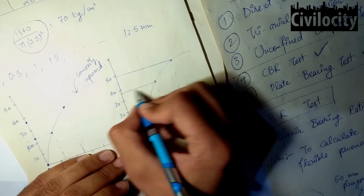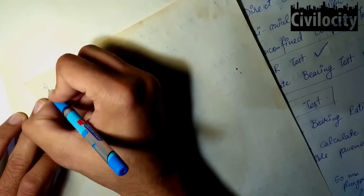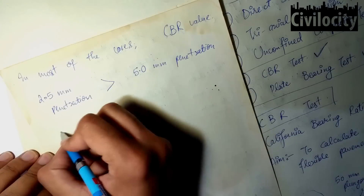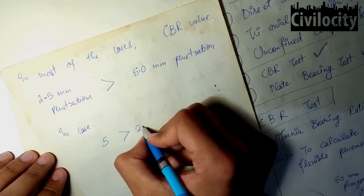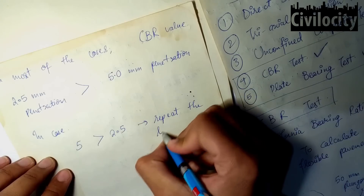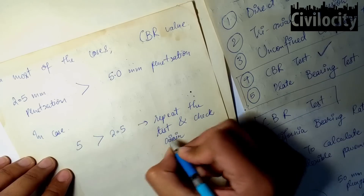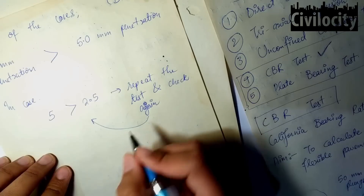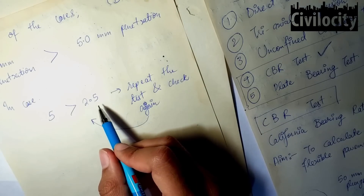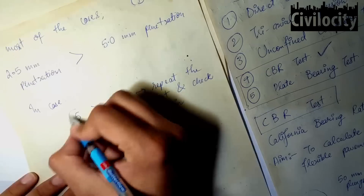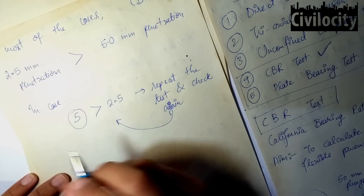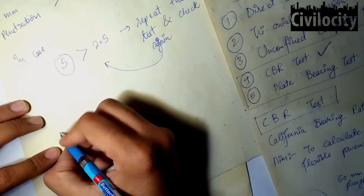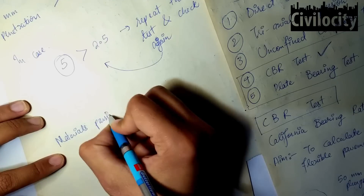The test results indicate that the CBR value at 2.5 mm penetration is typically higher than at 5 mm penetration. If you get a higher CBR value at 5 mm than at 2.5 mm, you must repeat the test and recheck. Only if you consistently get a higher value at 5 mm after repeating can you accept the 5 mm penetration value. If multiple specimens are tested, you can take the average of their CBR values.